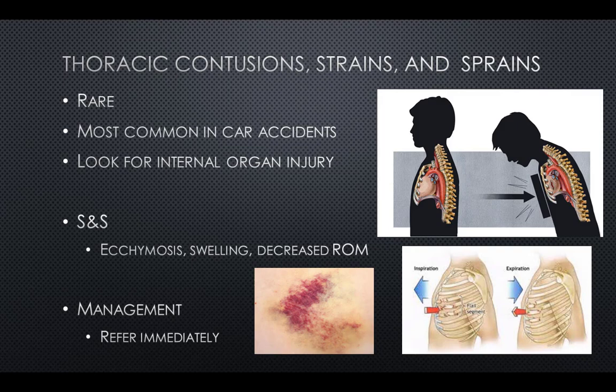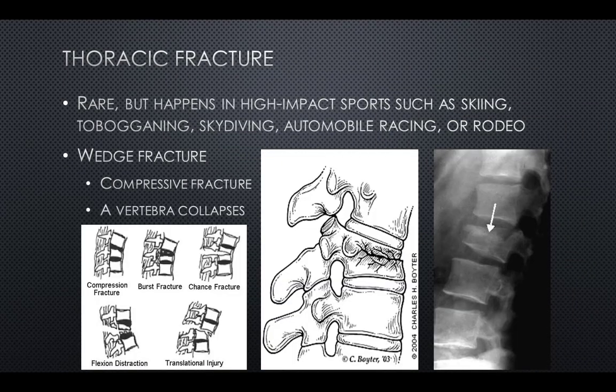Signs and symptoms of thoracic contusions include ecchymosis, swelling, decreased range of motion, and possible difficulty breathing. Management includes immediate referral. Thoracic fractures are rare but can happen in high-impact sports such as skiing, tobogganing, skydiving, automobile racing, and rodeo.